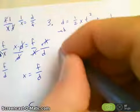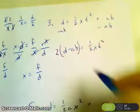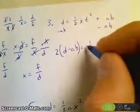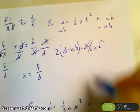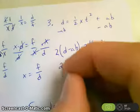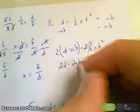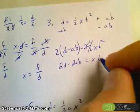Multiply by 2. Make sure you use this parenthesis. We're multiplying this whole side by 2 and multiplying this whole side by 2. 2 times a half is 1, so they cancel. So now I have 2d minus 2ab equal to x t squared.